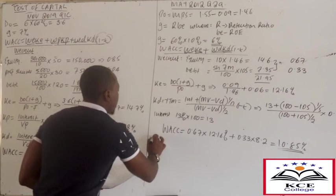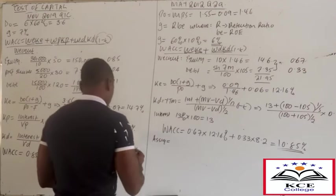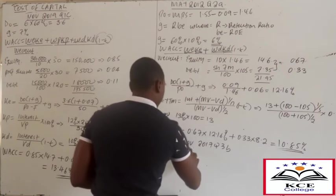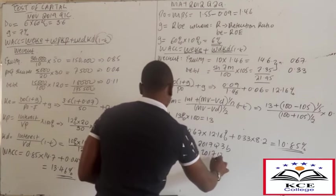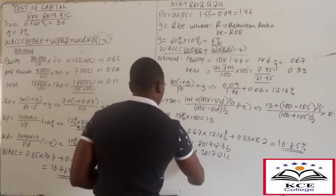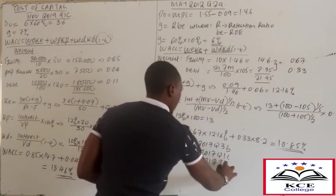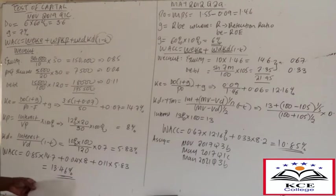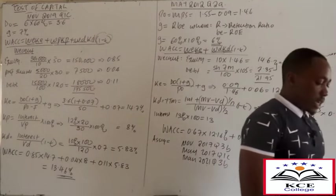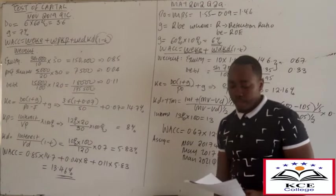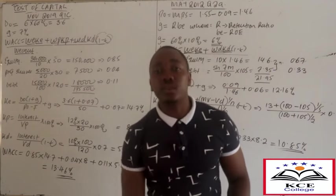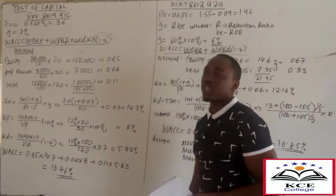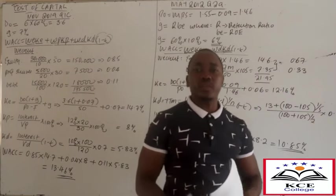For assignment, at your own time try November 2017, May 2017 Question 1C, and May 2021 - these are already in your notes. We shall do more questions during revision. Also in your notes, go through the disadvantages of WACC and the differences between WACC and WMCC - that's another highly examinable theory part. In our next session, still under the same topic, we look at capital structure.